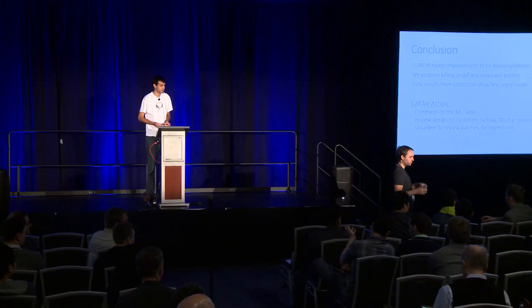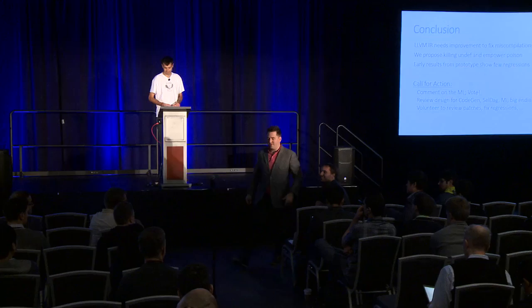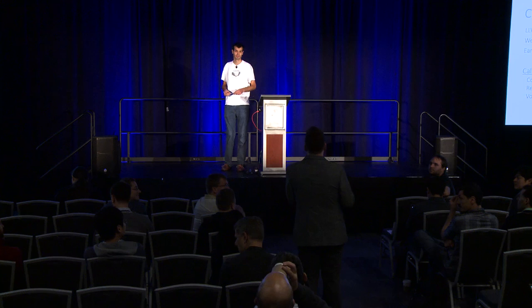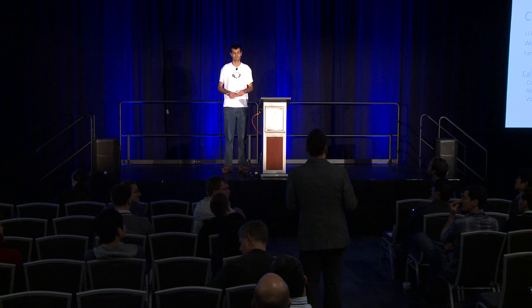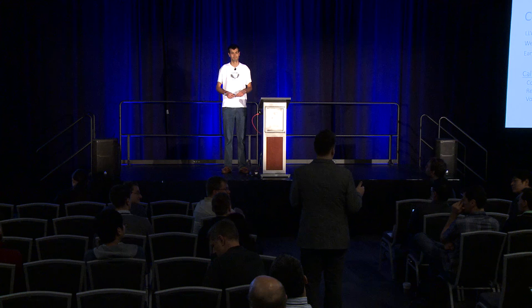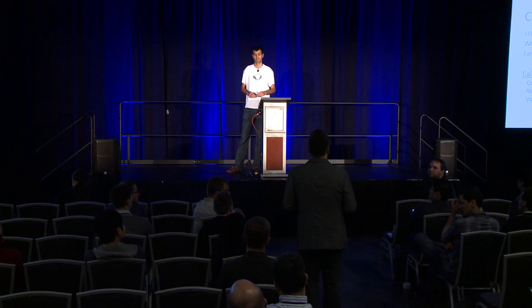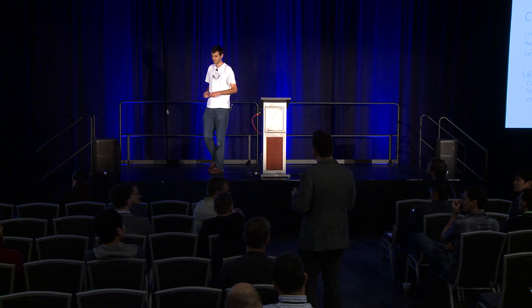In the Q&A, one attendee raised a concern: the proposal kind of puts a type into memory in the IR — the granularity of poison is somehow attached to a type and even propagated through memory. LLVM doesn't have typed memory, and the entire optimizer assumes integers and vectors of I1s are the same. The suggestion was to explore other ways of solving that particular piece, while acknowledging that the poison-versus-undef part has been handled really well.